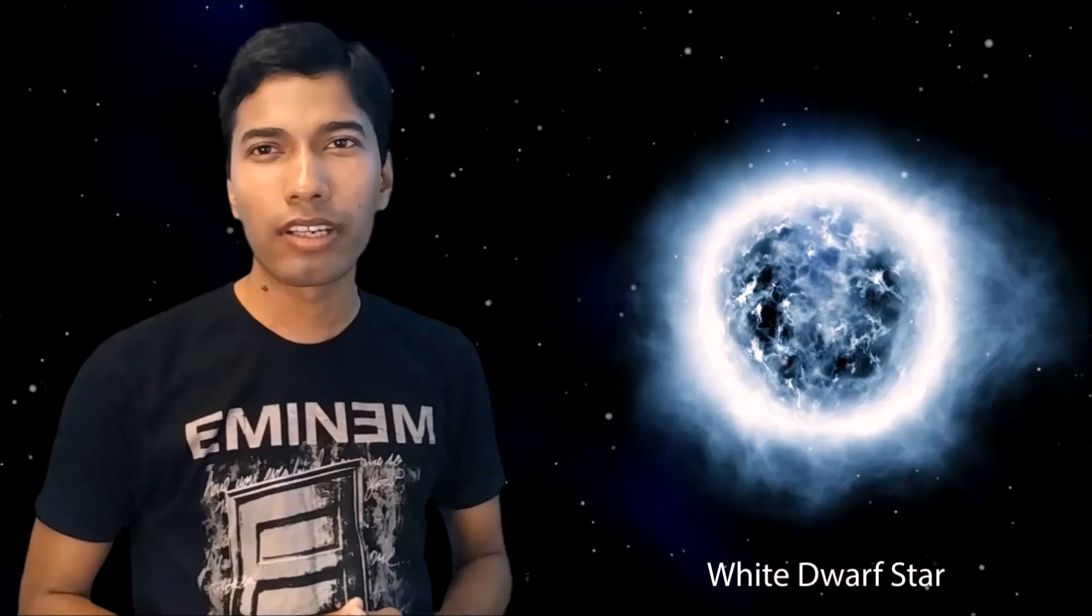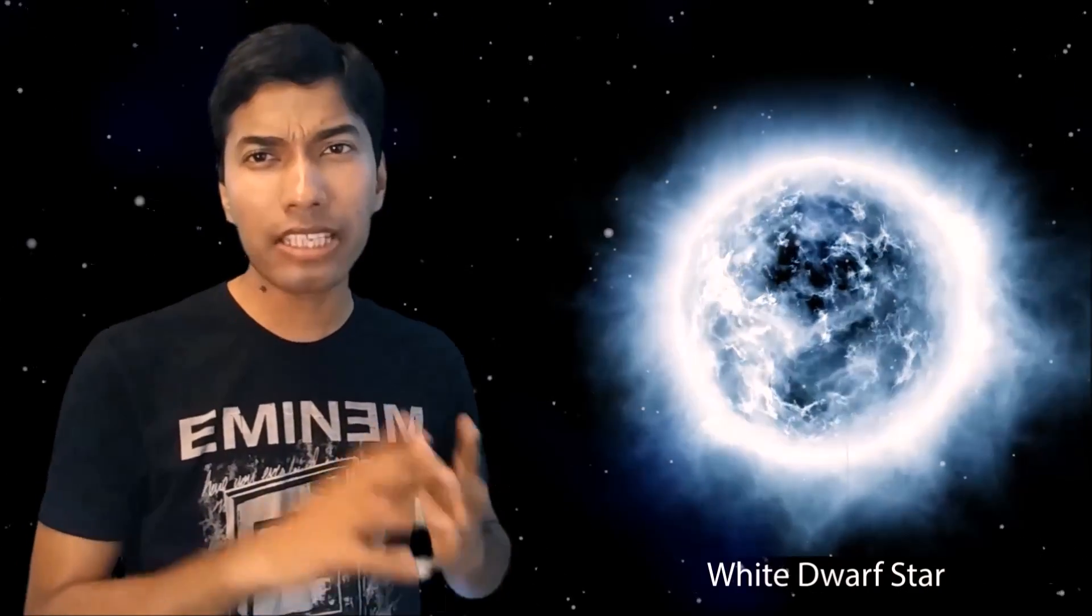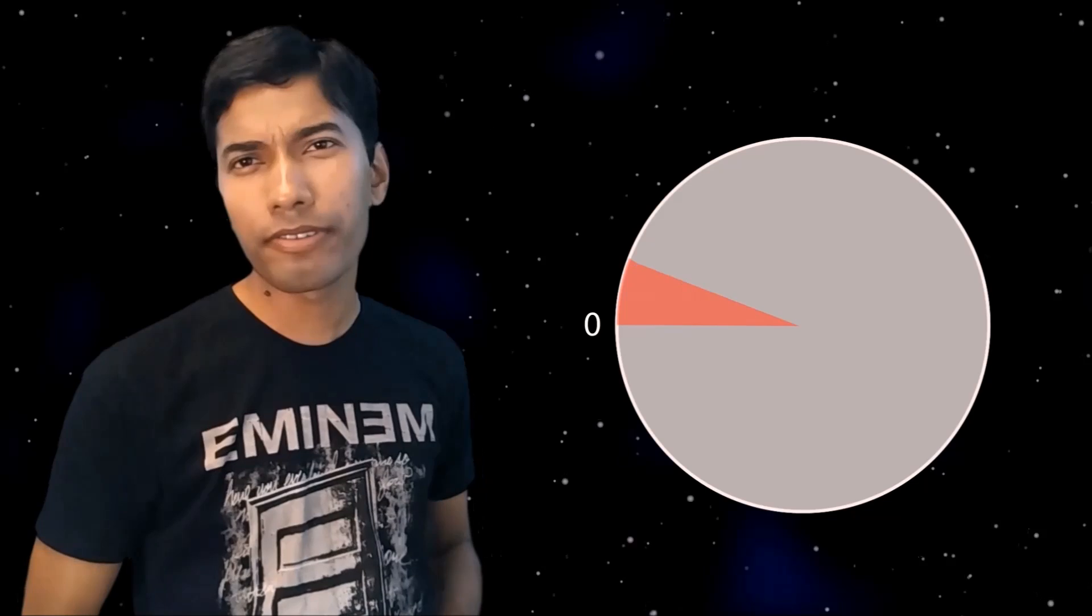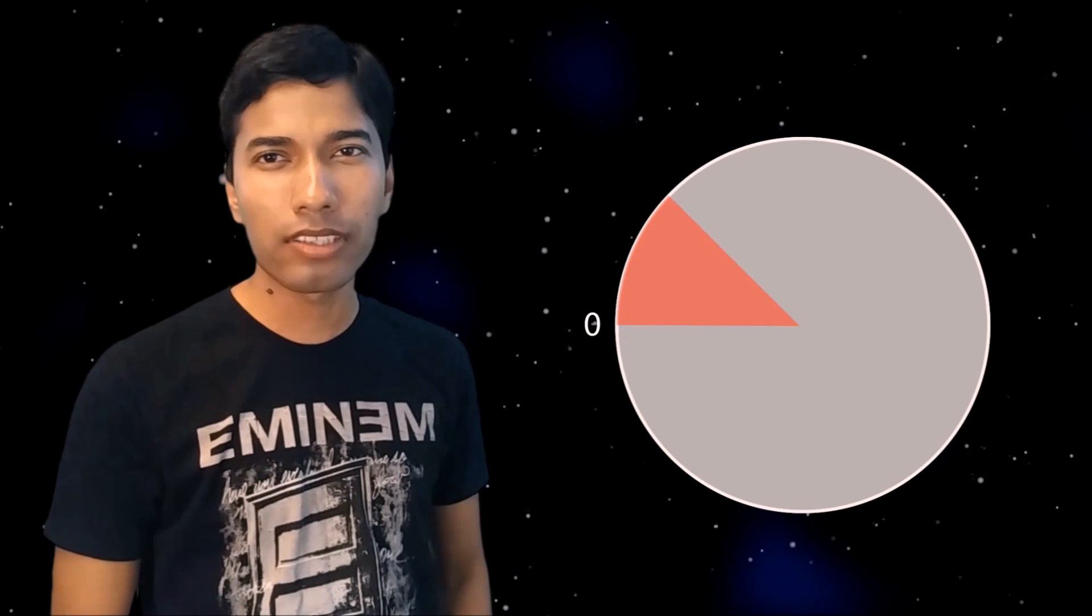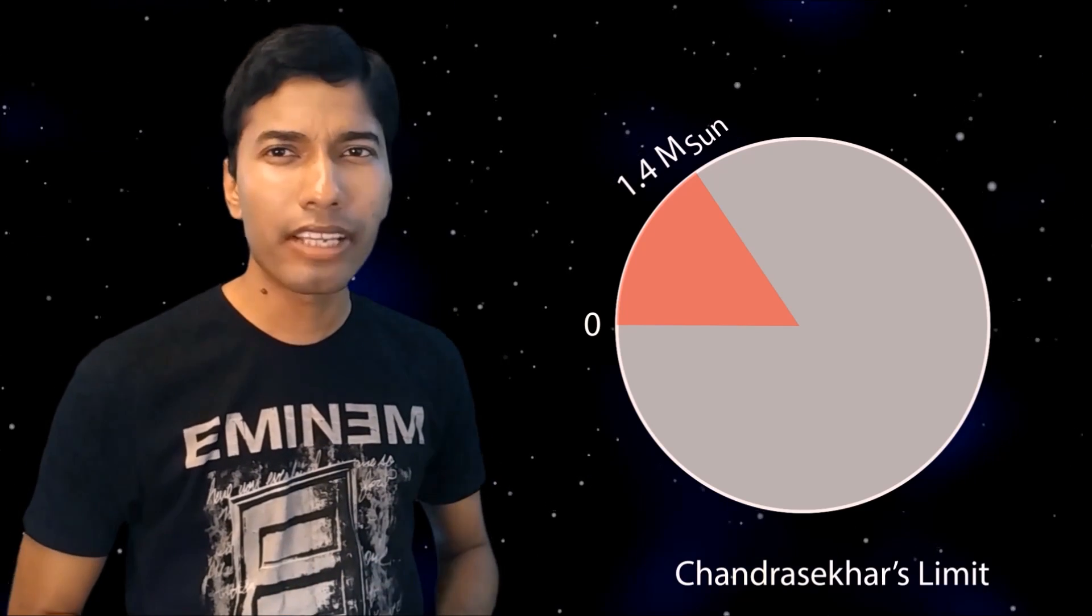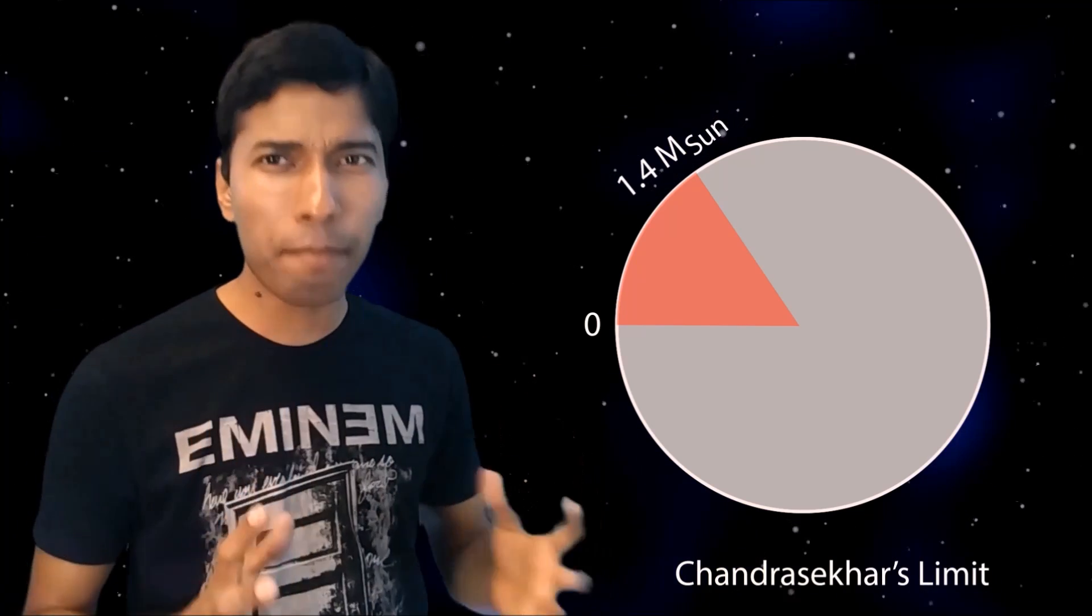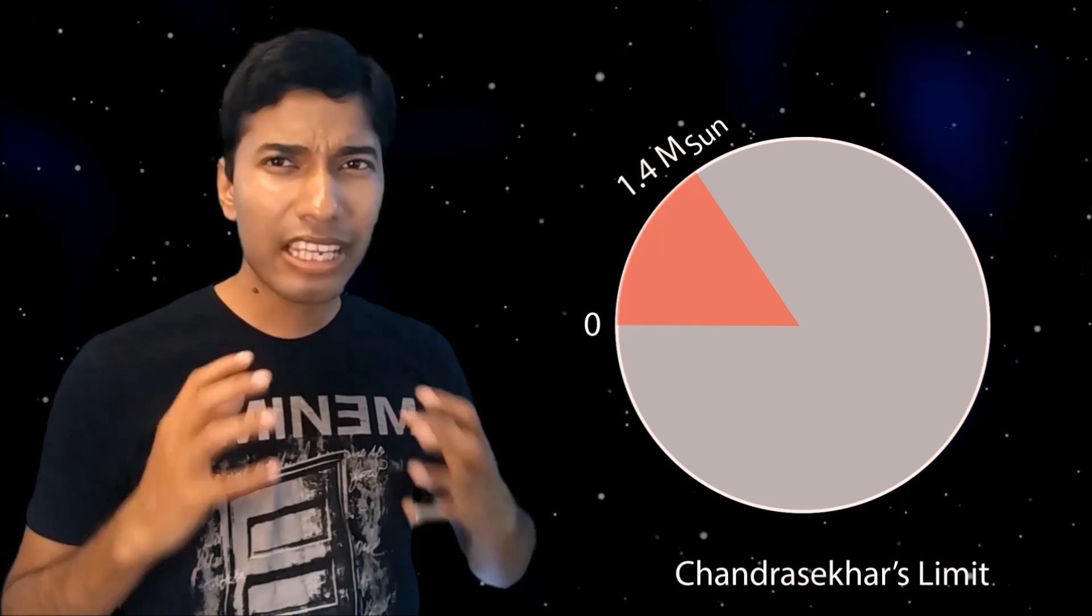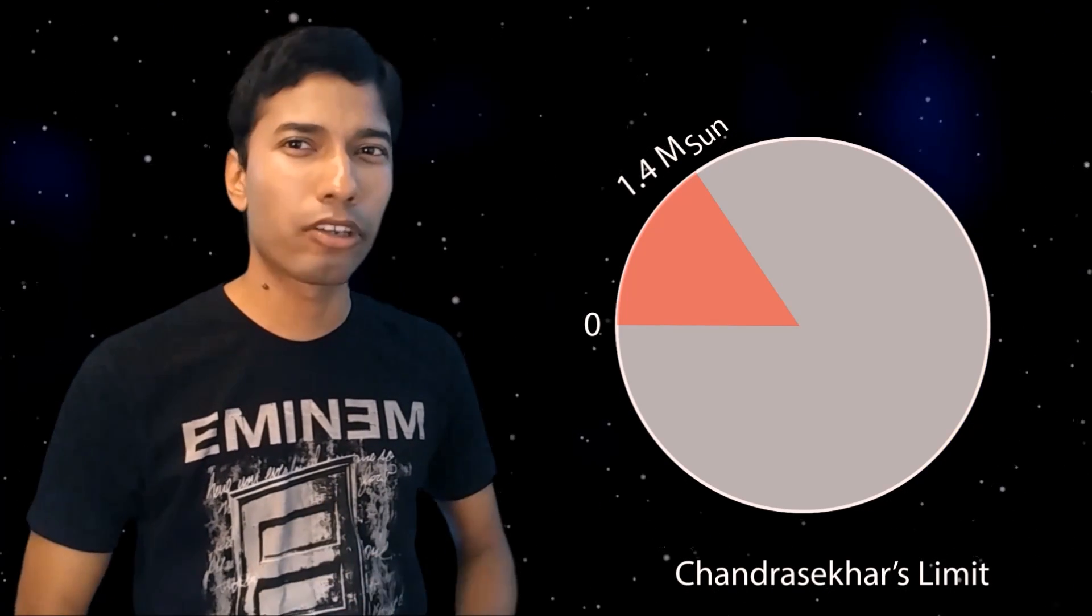This is a white dwarf star. For a white dwarf star, mass is inversely proportional to the radius. If the mass of a white dwarf star is less than 1.4 solar masses, then it will remain as a white dwarf star. This mass limit is known as the Chandrasekhar limit. But if the mass of the star is more than 1.4 solar masses, then the electron degeneracy pressure cannot stop the collapse.